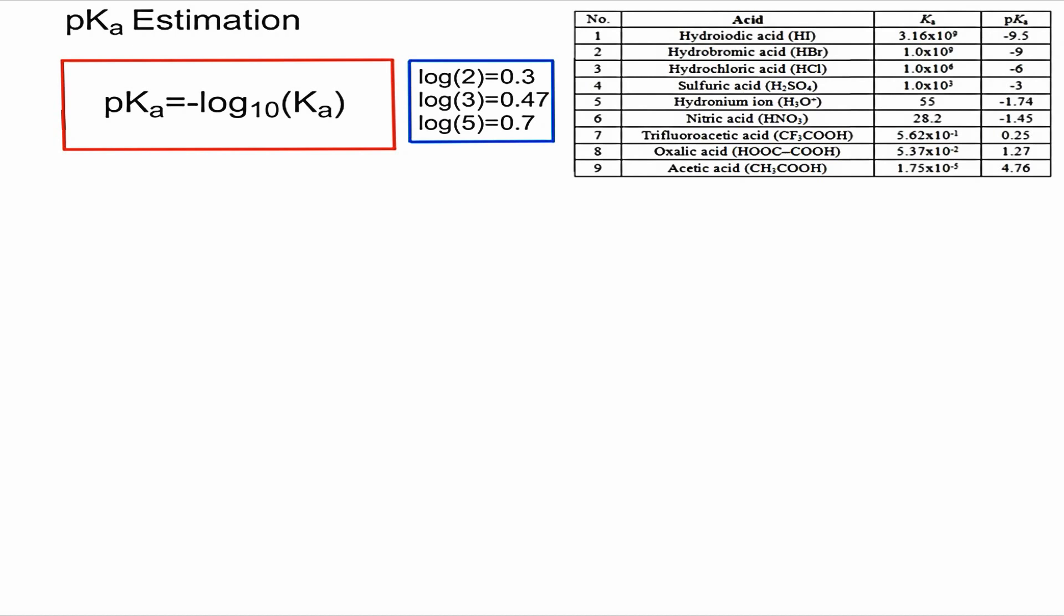As I explained in the previous video, the formula to calculate the pKa when you start with the Ka constant is this: the pKa is equal to the negative logarithm base 10 of the Ka.